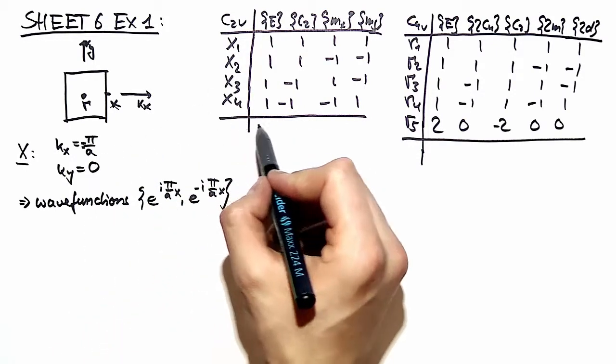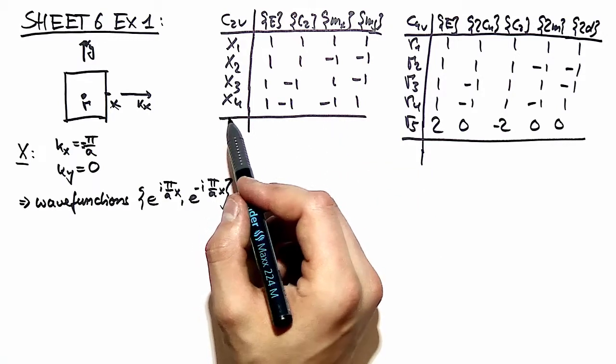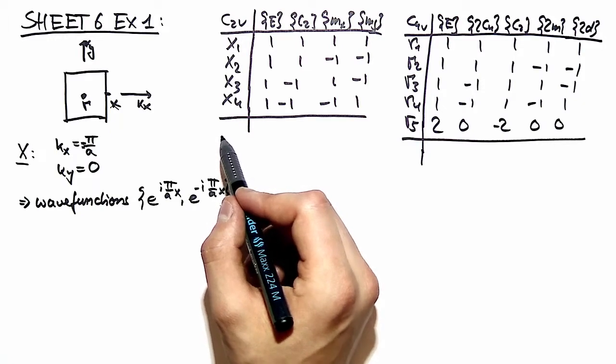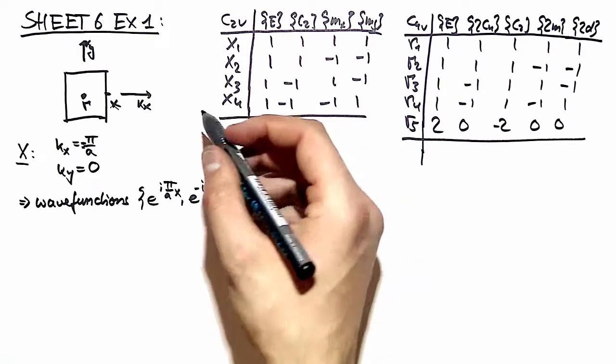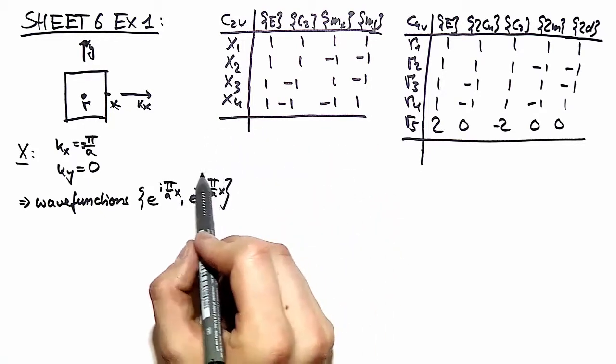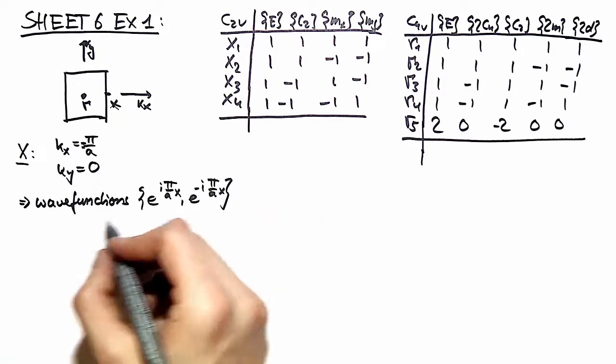The traces then give us the characters for our representation, and we can then use that information via the decomposition theorem to see out of which irreducible representations our two-dimensional representation here is constructed. So okay, let's do it.